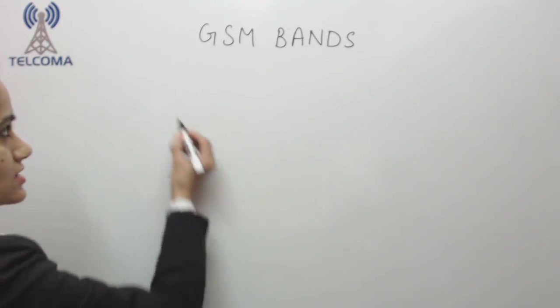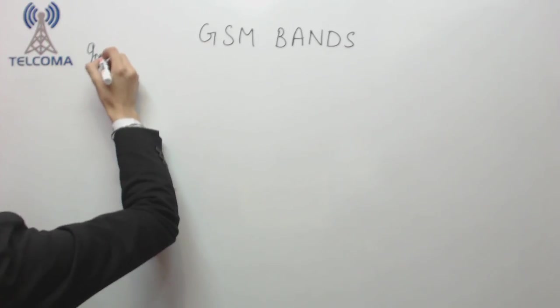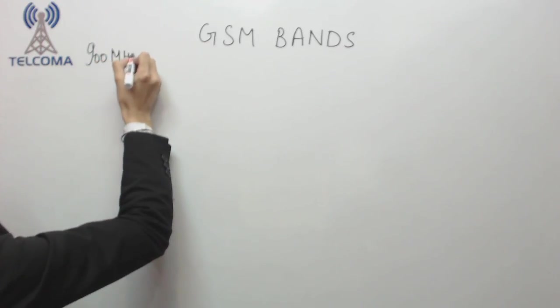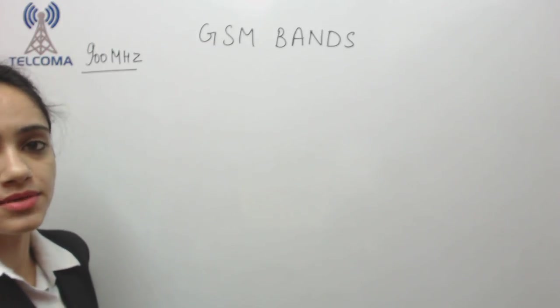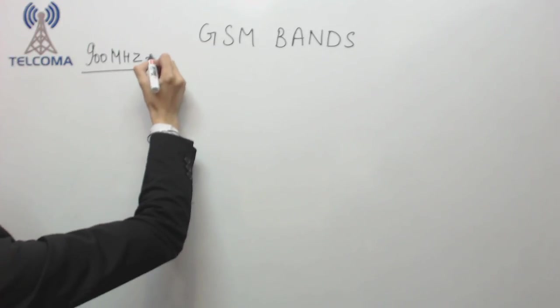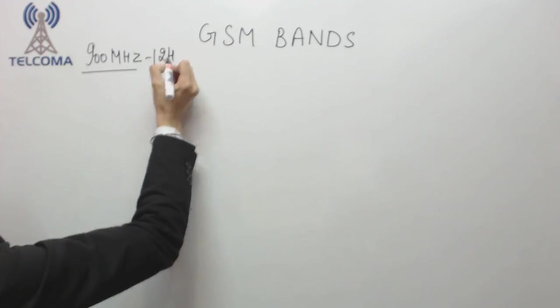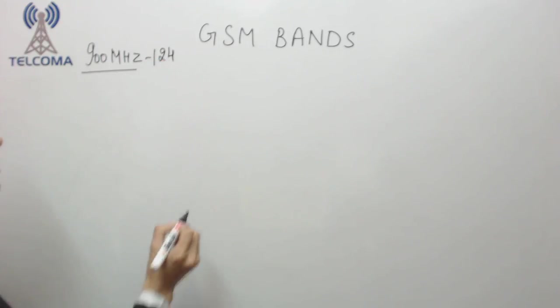Hello and welcome to another class on GSM bands. Today we're going to discuss additional bands. In the previous class we discussed 900 megahertz band and calculated the total number of ARFCN in 900 megahertz band, which was 124.